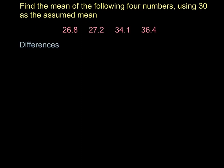So there are our four numbers. The first thing we do is calculate differences. Literally all we're going to do is take each number and take away the assumed mean, so we're finding the difference between each of our data values and our guess. The first one is 26.8 take away 30 to give us negative 3.2.